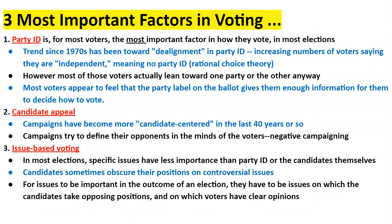Some important factors — the three most important that determine how people vote: party ID, the appeal of the candidate, and the issues. Party identification is really the most important factor. If they are aligned with a party, they are probably going to support the people in that party. Unless they're independent — and we see rational choice leading to de-alignment from the parties, more moderates, more independents, more people in the middle. But elections are swinging back and forth more these days because people don't have that party ID.